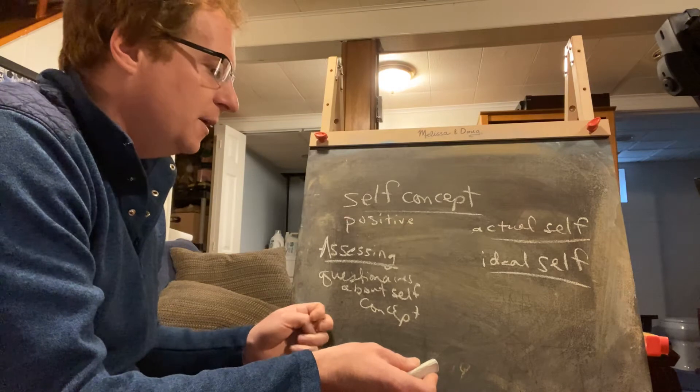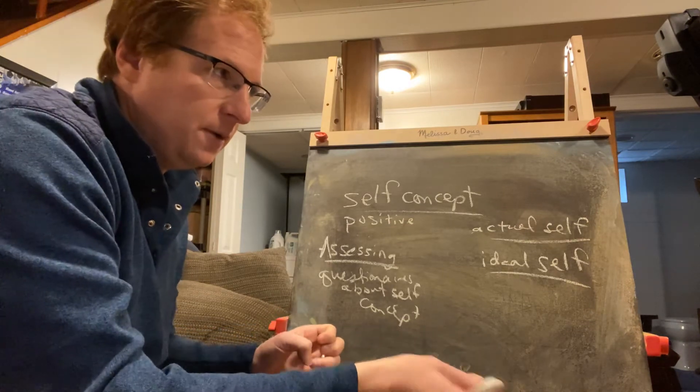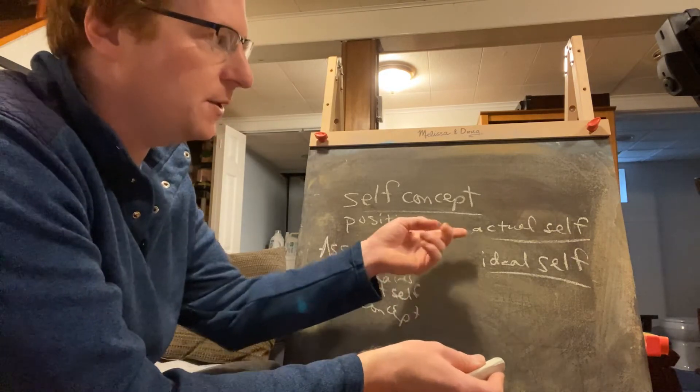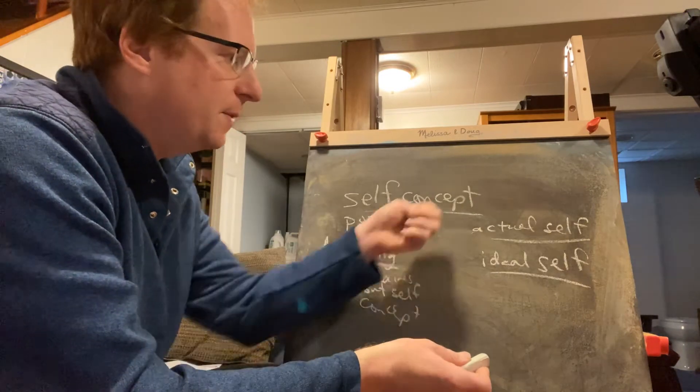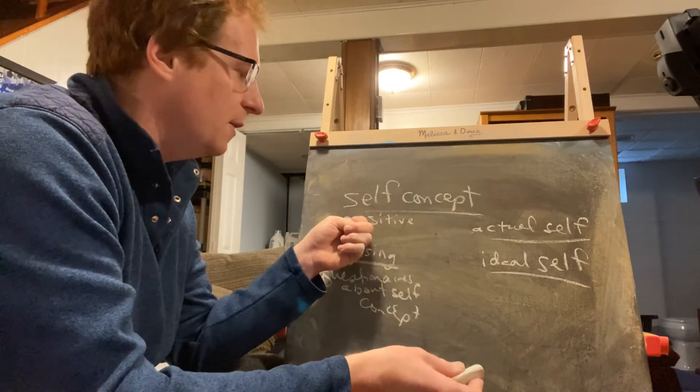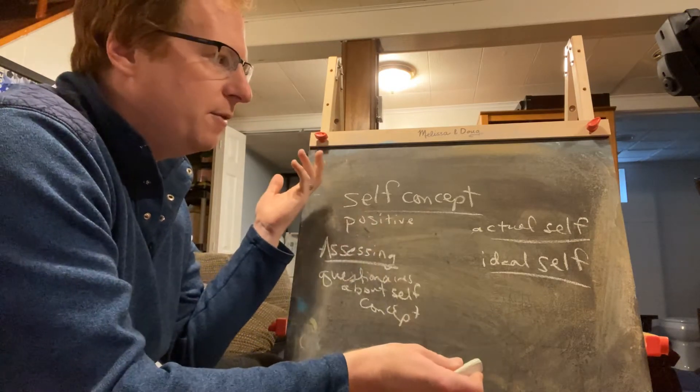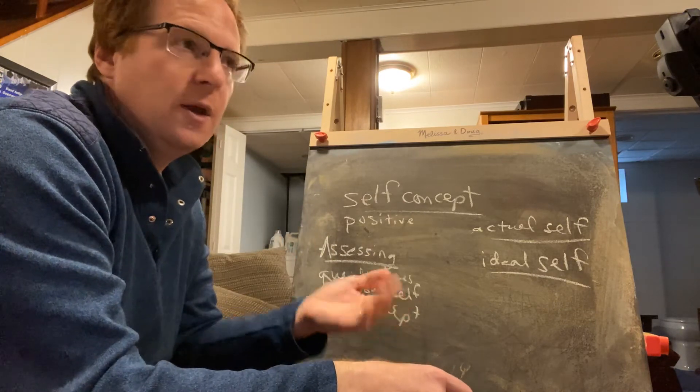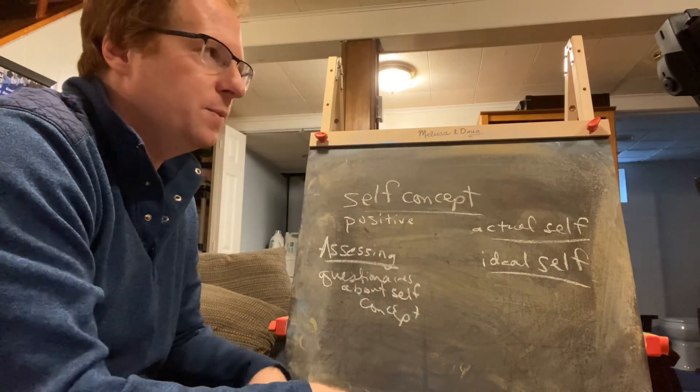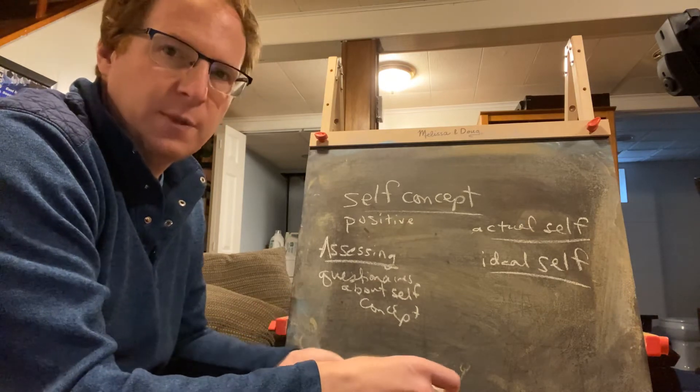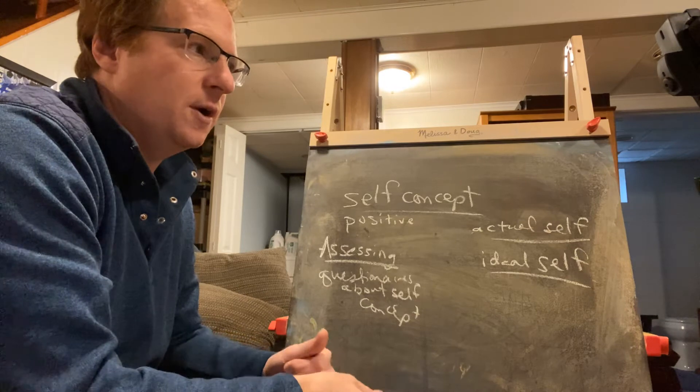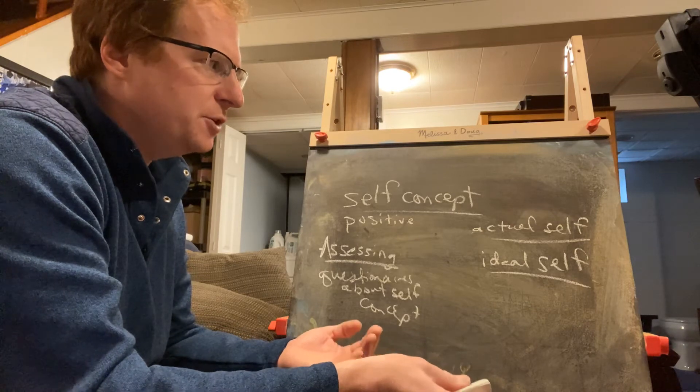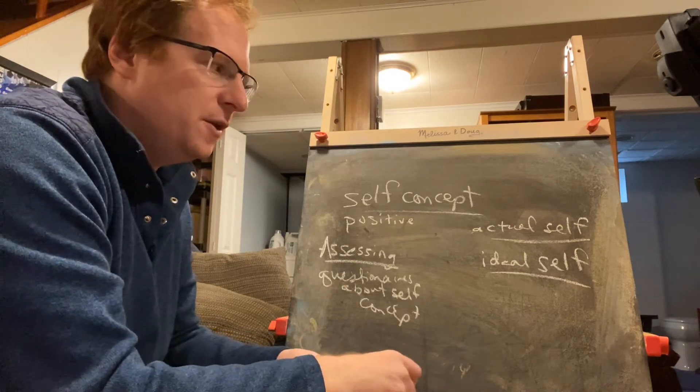That's how a humanistic psychologist would assess you if you were in therapy or wanted to see how you felt about yourself. They'd give you a questionnaire and ask you to define your actual self and your ideal self. If they were very close, that would be a positive self-concept. If they were really far apart, that would be a negative self-concept, and that would be something a humanistic psychologist would work through with you by genuineness, empathy, acceptance—the unconditional positive regard, the person-centered perspective.